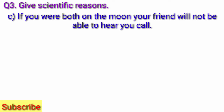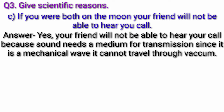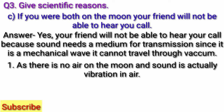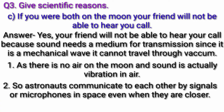Answer: In tabla, where leather is fitted, sound gets generated when the leather surface is thumped by fingers or palm. The waves thus created travel in two dimensions. Sitar has strings attached to a pumpkin box called a sound box. Sounds generated by tabla and sitar are different because they have different pitch and frequencies. Question C: If you were both on the moon, your friend will not be able to hear you call. Answer: Yes, your friend will not be able to hear your sound because sound needs a medium for transmission. Since it is a mechanical wave, it cannot travel through vacuum, as there is no air on the moon and sound is actually vibration in air. So astronauts communicate with each other by signals or microphones in space, even when they are closer.